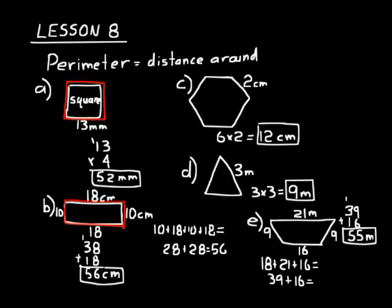Remember that perimeter means distance around. Anytime you do a perimeter problem, make sure you write your numerical value as well as the units — each one of those is half of the problem: half for the number, half for the units. Okay, that's all for lesson 8.